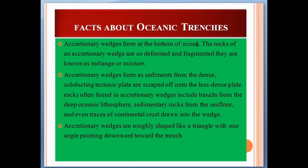Some facts about oceanic trenches: accretionary wedges form at the bottom of the ocean. The rocks of an accretionary wedge are so deformed and fragmented they are known as melange, or mixture. Accretionary wedges form as sediments from the dense subducting tectonic plates are scraped off onto the less dense plate. Rocks often found in accretionary wedges include basalts from the deep oceanic lithosphere, sedimentary rocks from the sea floor, and even traces of continental crust drawn into the wedge.